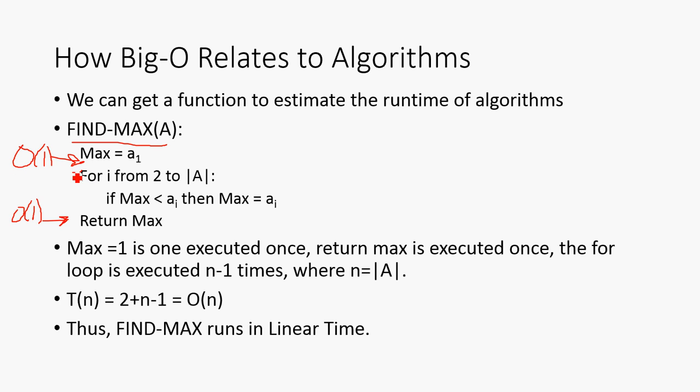So, then the next piece is this for loop right here, and that runs n-1 times. Because it starts from 2, and it goes to the end of A, which is n. So, n is going to be the cardinality of A, so the number of elements in the data structure. So, we say that our function that estimates the running time, T(n), is going to be equal to 2 + n - 1. And this is clearly Big-O of n from the relationship we saw on the other slide. So, this FIND-MAX runs in what we call linear time, or Big-O of n. And these two mean the same thing.